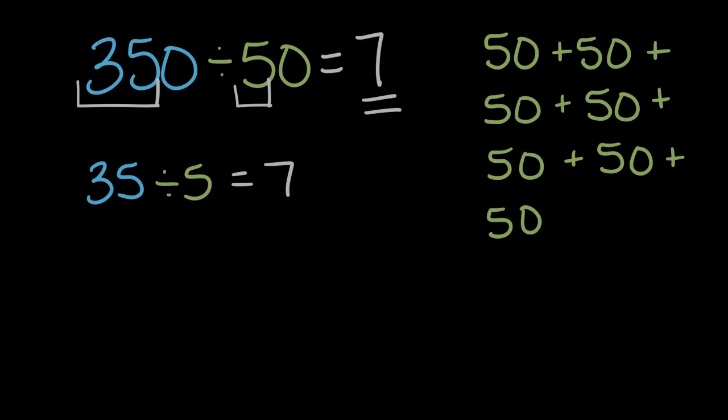So in a way, these zeros didn't matter. They didn't affect our answer. We were able to cancel them out. Having the zero in the first number is canceled out by having that zero in the second number. And let's look at why that is.